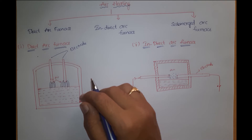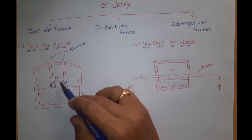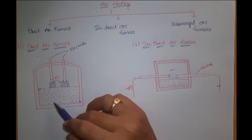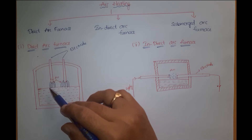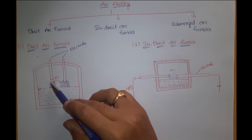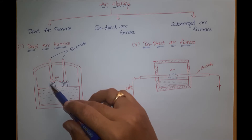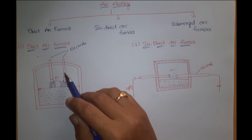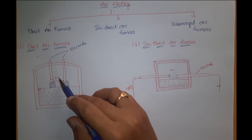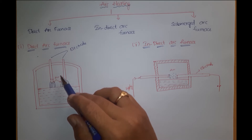When you apply certain high voltage across the air gap between the electrodes and the charge to be heated, the air in the gap gets ionized because of the influence of electrostatic forces, and this gap becomes a conducting medium. So when this current flows in the form of continuous spark, that is called an arc. When electrodes are made up of carbon or graphite, the temperature obtained can be in the range of nearly 3000 to 3500 degrees centigrade.